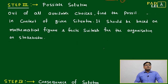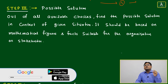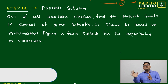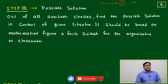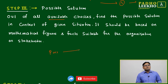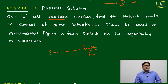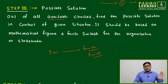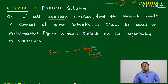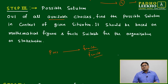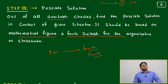Step three: possible solutions. First, divide the choices into two categories — possible and irrelevant. Once you categorize into possible solutions, the next job is to determine which ones are feasible. If the feasibility test for a particular possible solution shows a very positive trend for your company, you can opt for it. It will depend on mathematical figures and facts suitable for the organization.